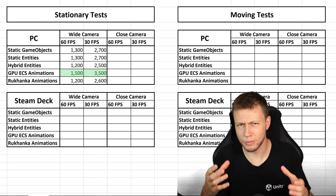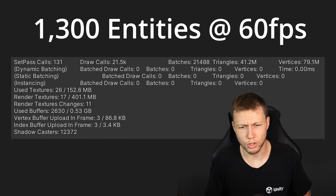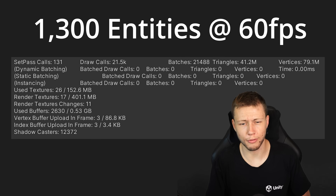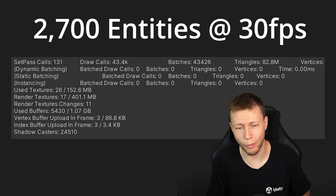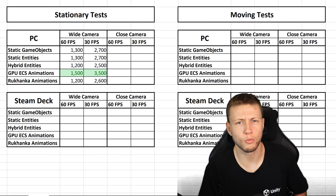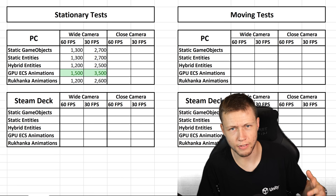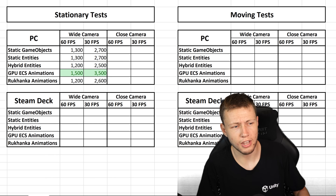Just to give context on what's actually being rendered: at 1,300 entities, we're looking at 21.5 thousand draw calls per frame and 41.2 million triangles every frame. At 2,700 entities, those numbers roughly double — 43.4K draw calls and 82.8 million triangles. I was surprised these entity counts were a bit lower than I originally thought, but it shows how expensive rendering all these things at once really is. This is definitely where LOD optimizations would help significantly.